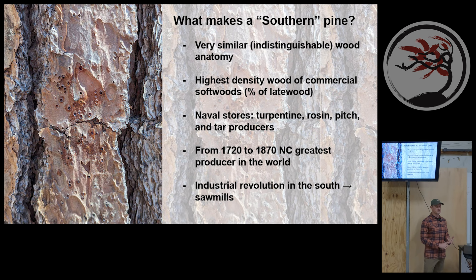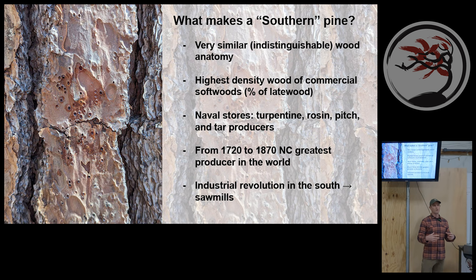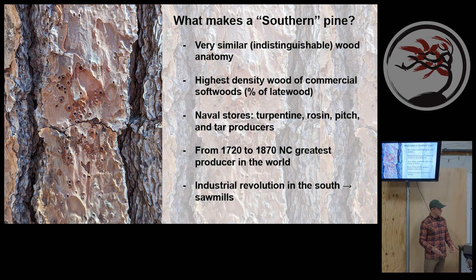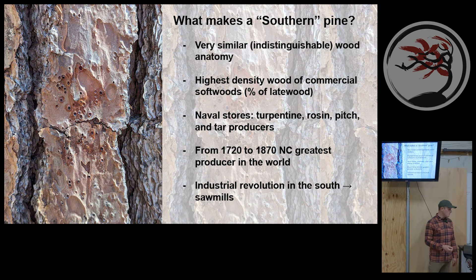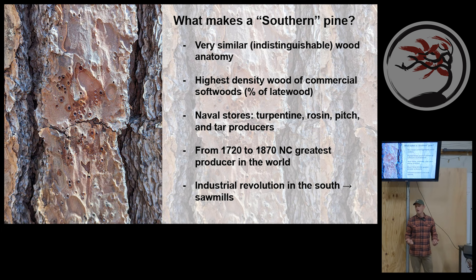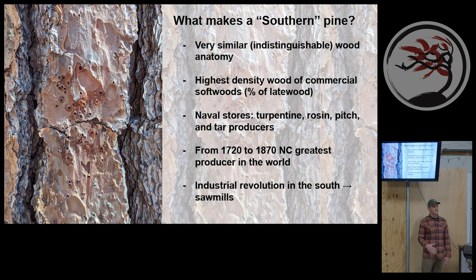What really put North Carolina on the map economically was the use of this wood in naval stores. Naval stores refers to products stored for shipbuilding primarily — turpentine, rosin, pitch, and tar. These products had other uses but were really economically significant for shipbuilding, including masts. North Carolina was the largest producer of naval stores in the world — something like 80 percent of naval stores being exported came from North Carolina.